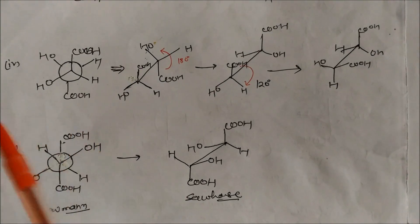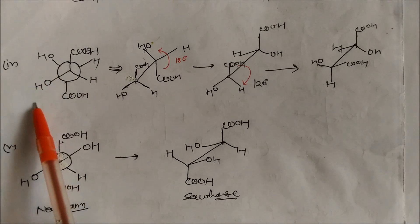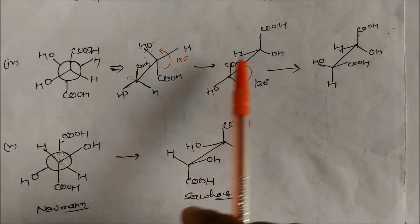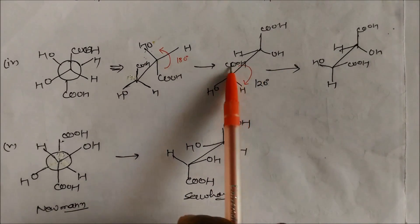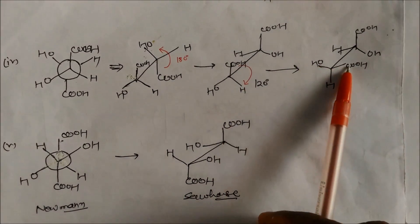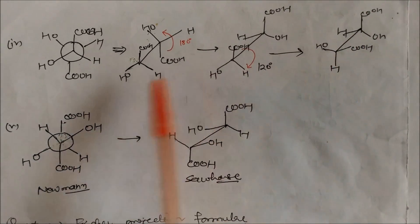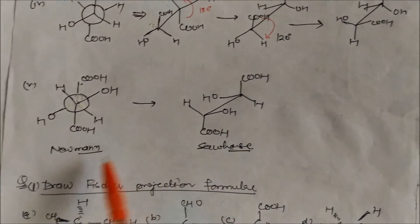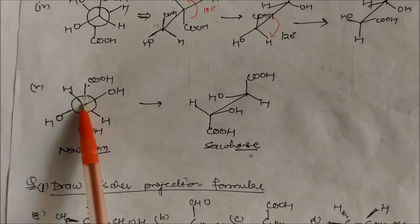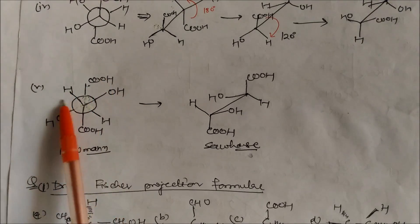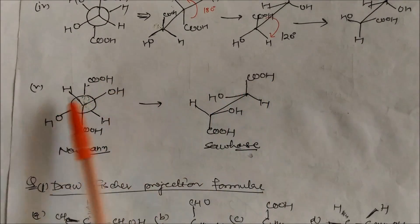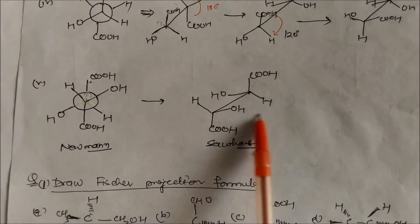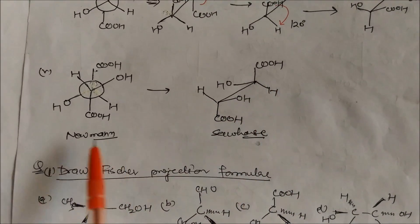Another example: HOH is down the plane and above the plane. You can convert the Sawhorse projection — HOH is up, and the other group is down — by rotating and taking any type of shape needed. You can rotate and represent the structure in different forms. These are the Newman and Sawhorse projections and their interconversions.